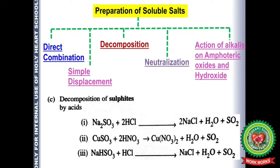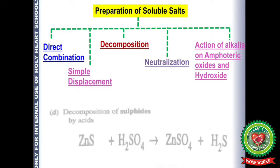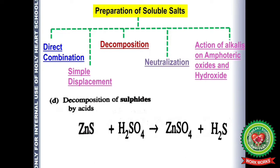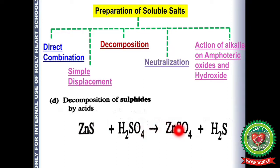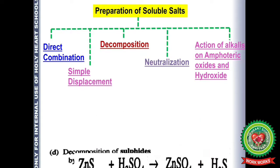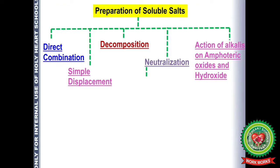The fourth type is decomposition of sulfides by acid. The formula of zinc sulfide is ZnS (zinc is +2, sulfur is −2). When ZnS reacts with sulfuric acid it forms ZnSO₄ (zinc sulfate) and H₂S gas — hydrogen sulfide, which has a rotten egg-like smell.